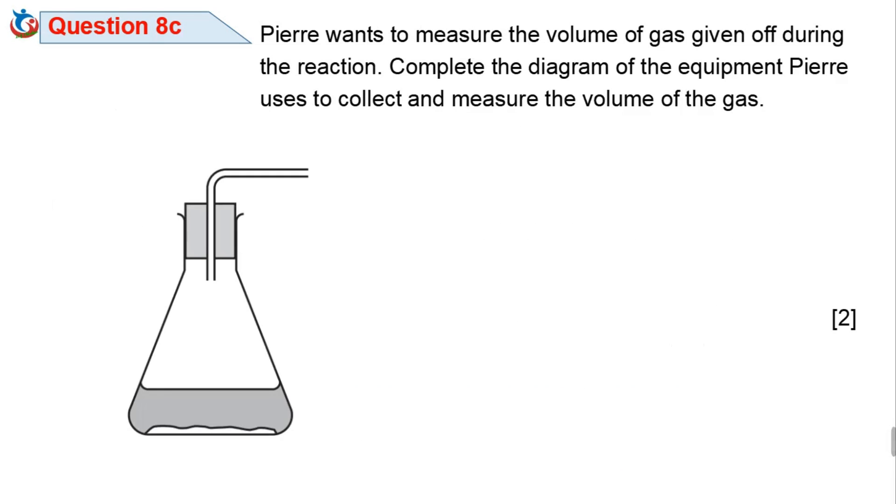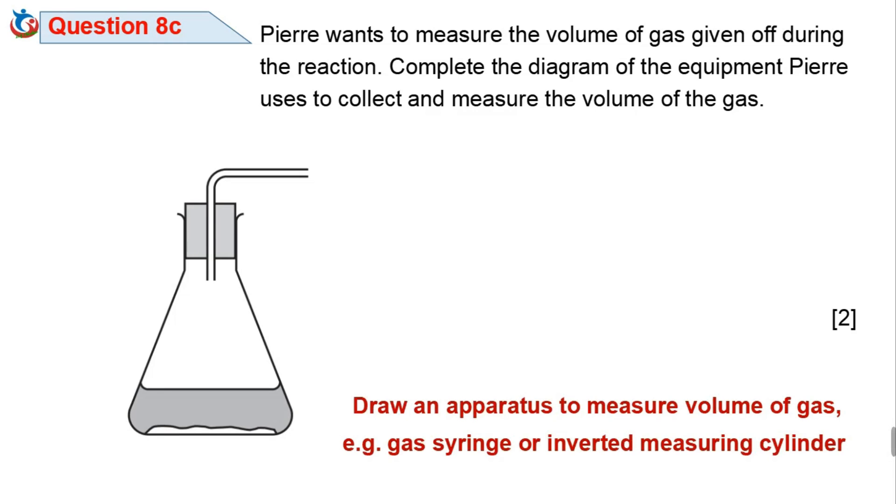Question 8c. Pierre wants to measure the volume of gas given off during the reaction. Complete the diagram of the equipment Pierre uses to collect and measure the volume of the gas. All you need to do is draw an apparatus to measure volume of gas produced during the reaction. You can draw a gas syringe across the tube.